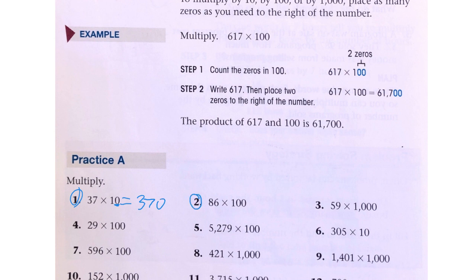Number 2, we have 86 times 100. And 100 has two zeros, so we'll write 86 and two zeros.